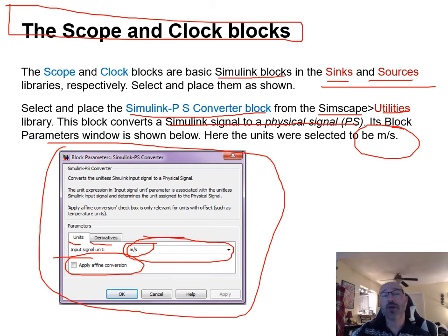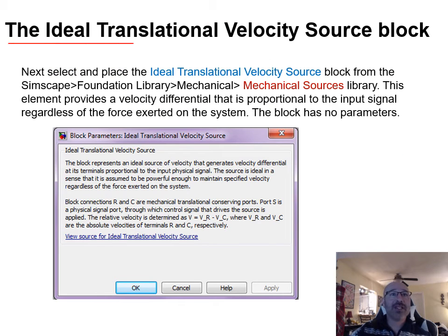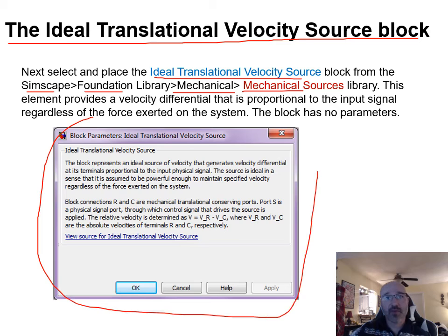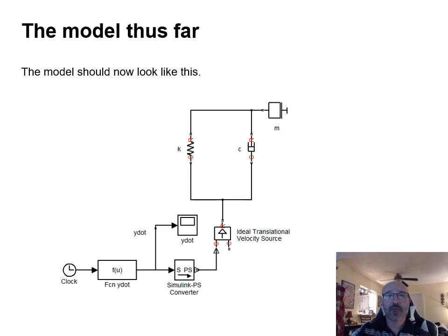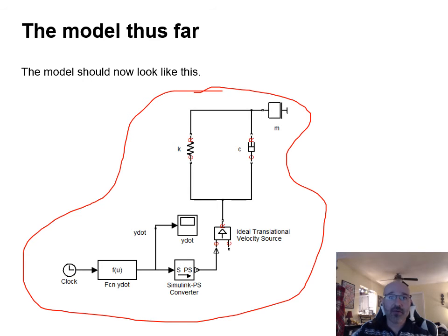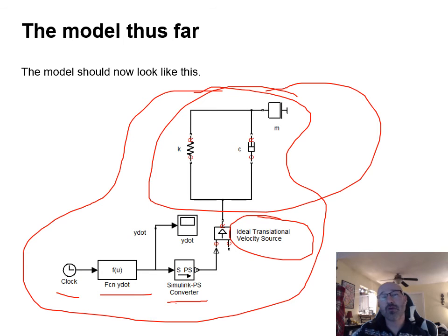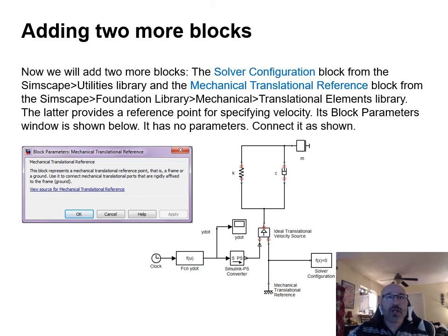The ideal translational velocity source block is found in Simscape Foundation Library > Mechanical > Mechanical Sources. Note that there are no block parameters for this element. At this point your model should include the clock, y-dot function, Simulink-PS converter, ideal translational velocity source, and the spring-mass-damper assembly.